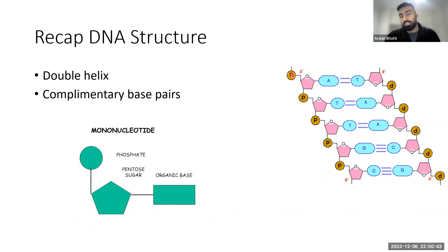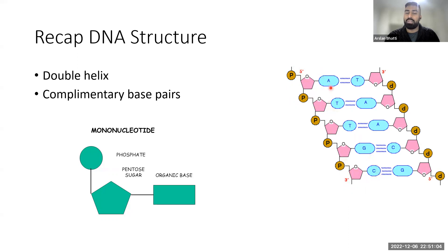Other things you need to know: down this way, the phosphate group and the sugar form what is known as your sugar-phosphate backbone. You can see it's almost like an imaginary column, and there's one on the other side as well. The organic or nitrogenous bases are the things shown in blue. So that's a quick recap on DNA structure.